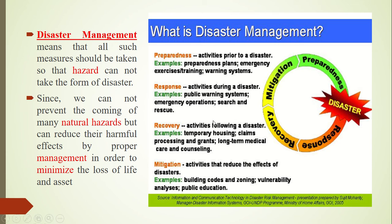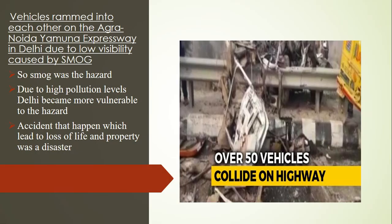As an example of how a hazard turns into a disaster: vehicles rammed into each other on the Agra-Noida Yamuna Expressway in Delhi due to low visibility caused by smog. Smog is the combination of smoke and fog — fog is a natural phenomenon, but high pollution levels turned it into smog. Smog was the hazard; Delhi's high pollution levels made it more vulnerable, and the resulting accident with loss of life and property was the disaster.